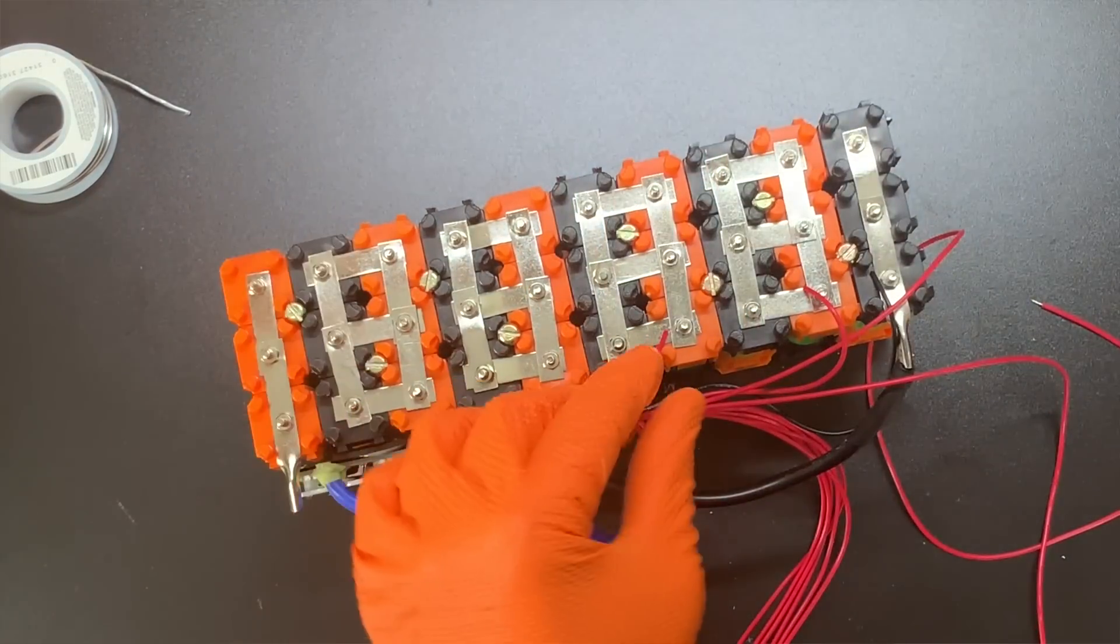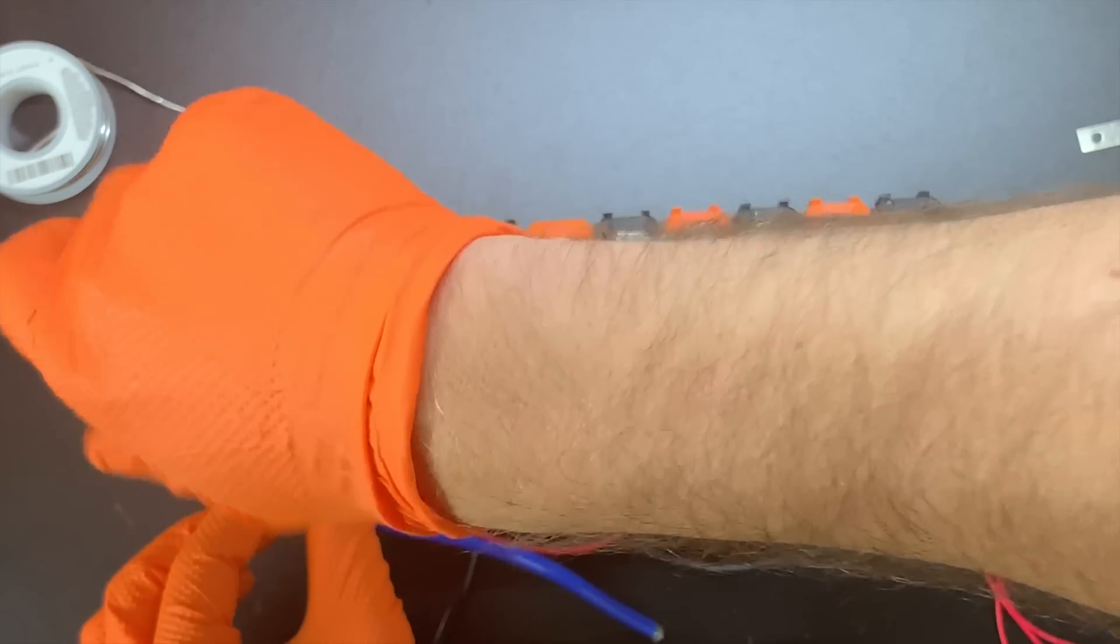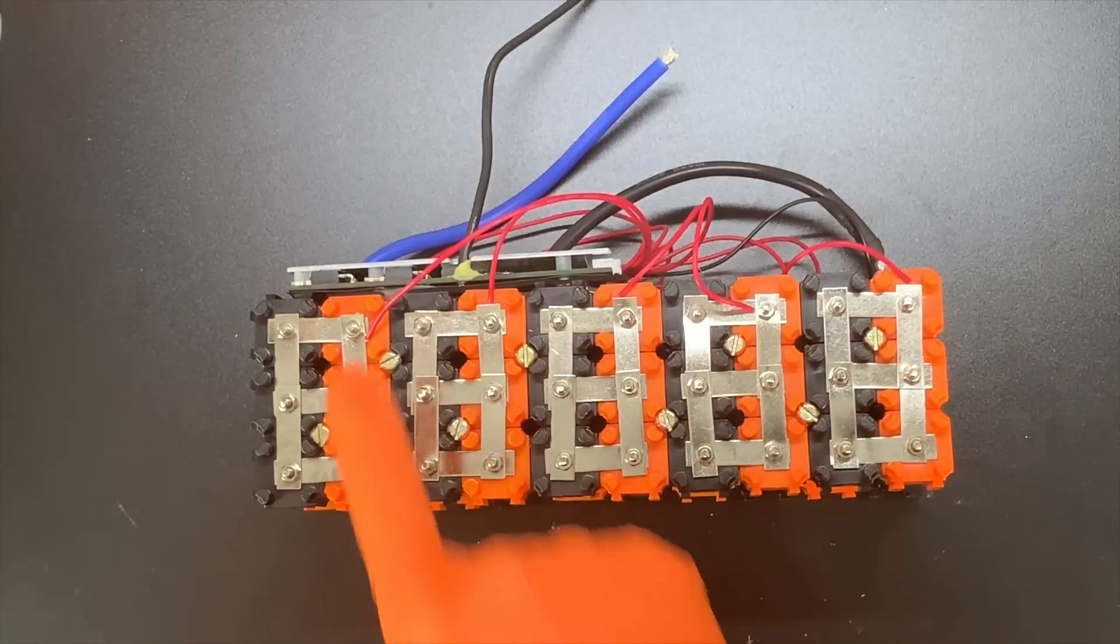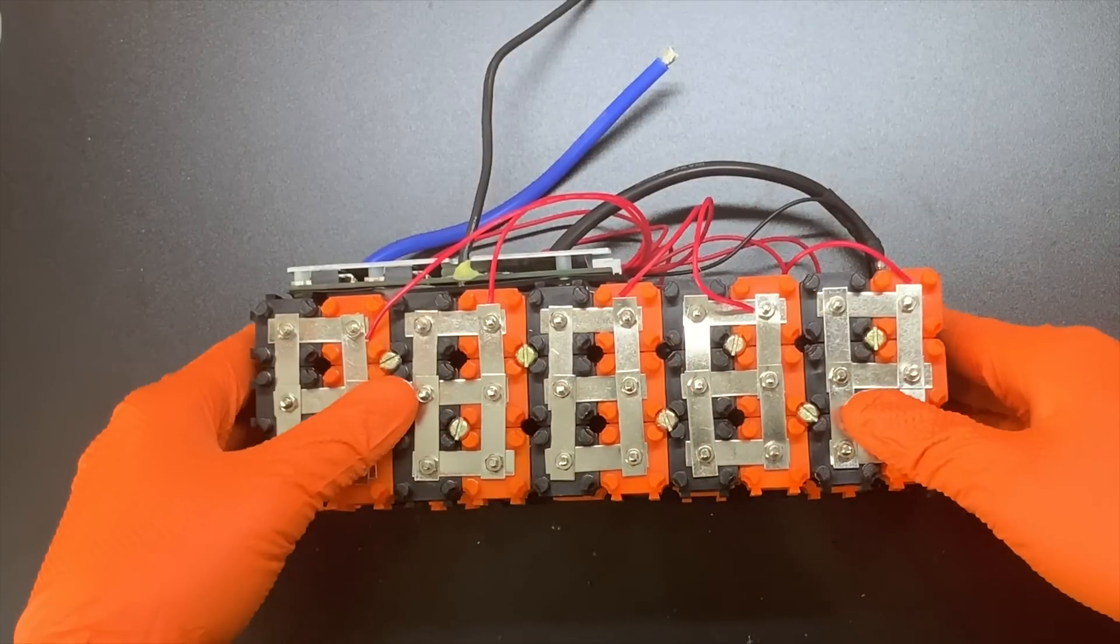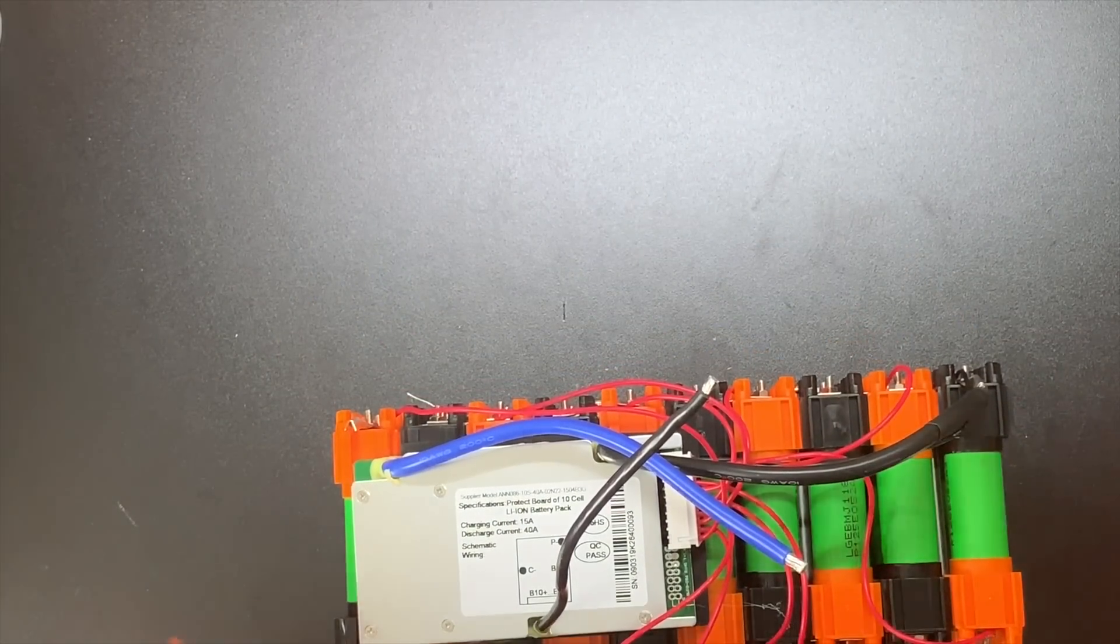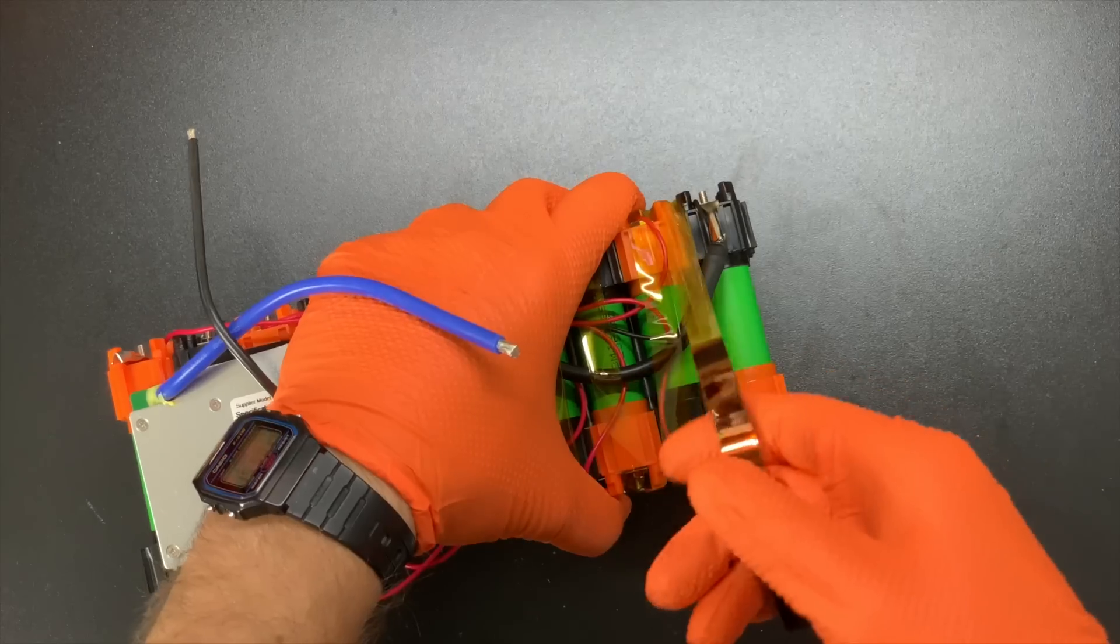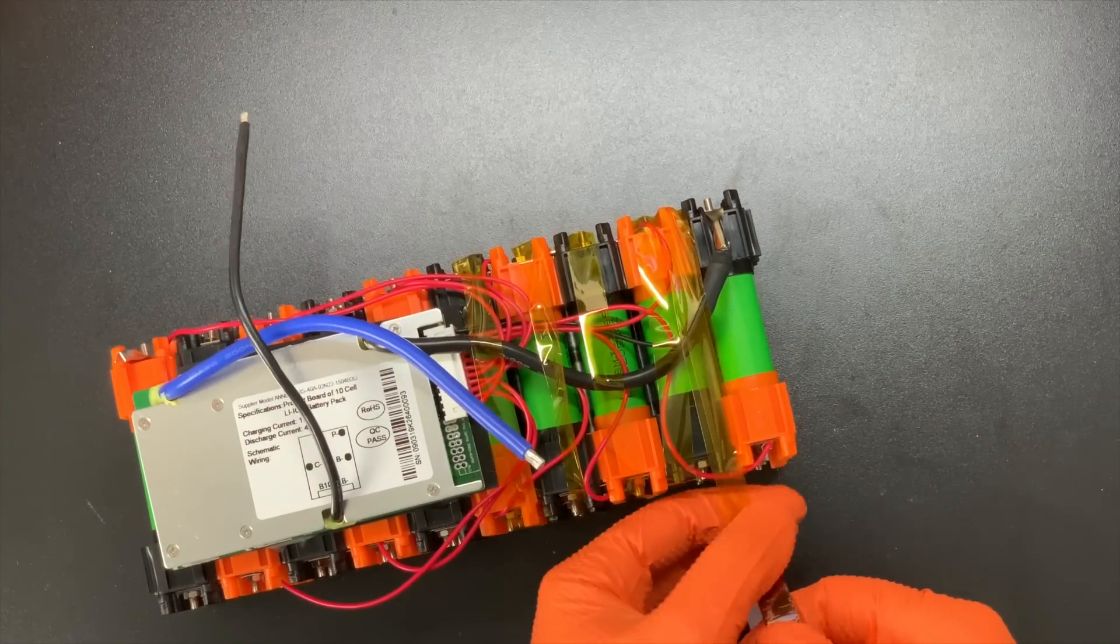Once I finish all of the even-numbered cells on this side of the battery, then I'll go back and do the odd-numbered cells by flipping the battery over. Always consult the wire diagram for your BMS. These Vruzen BMSs have wiring diagrams on the product page that will help you make the right connections.